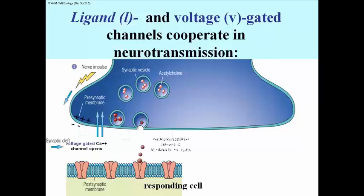And the neurotransmitters are released into the synaptic cleft — that is the space between the nerve ending and the membrane of the responding cell. And the neurotransmitters then bind to receptors on the responding cell.